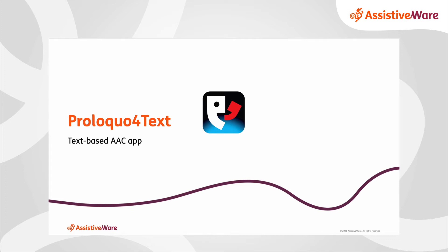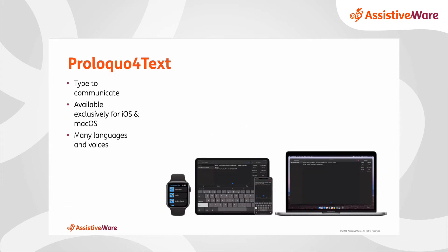Next up is Proloquo4Text. Proloquo4Text is a text-based AAC tool and it's available on iOS and macOS as well — it can even work on your Apple Watch. It is specifically designed for people who type to communicate. Proloquo4Text supports 18 different languages and actually has 130 voice choices.